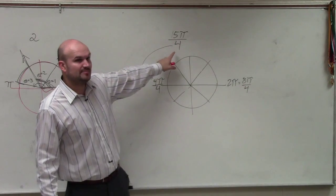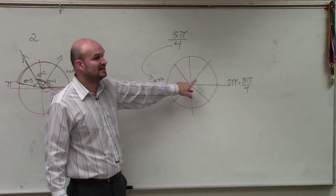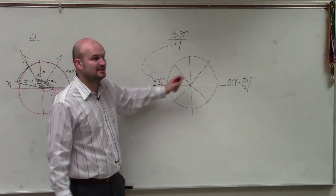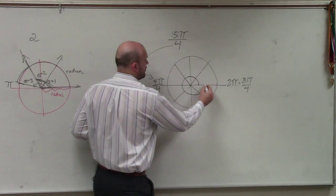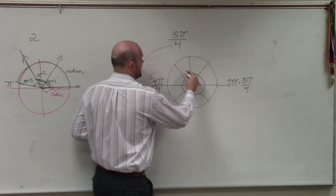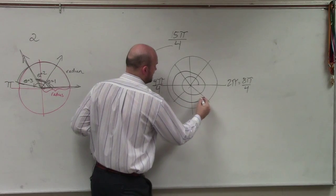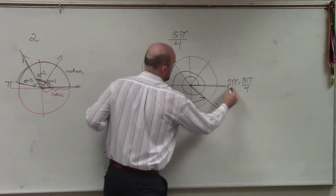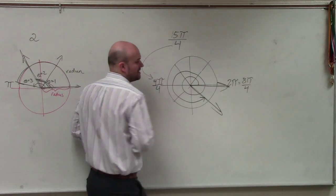We need to get to 15 pi over 4. If you've written it like this, it can be as simple as just adding the number of sections: that's 8 pi over 4, then 9 pi, 10 pi, 11 pi, 12 pi, 13 pi, 14 pi, 15 pi over 4. So that's your initial side, and that's your terminal side.